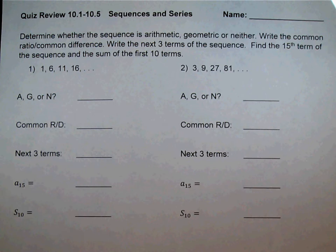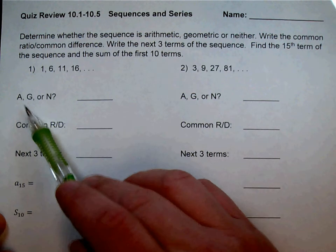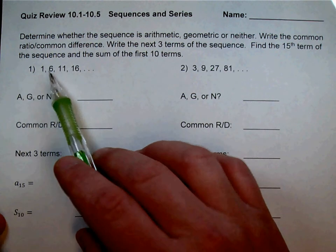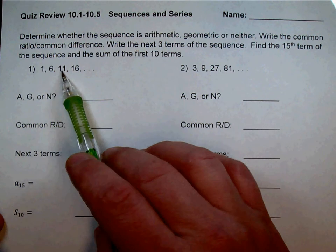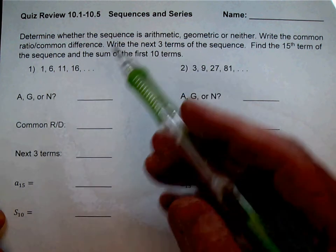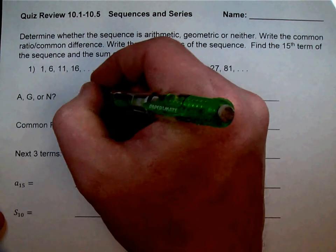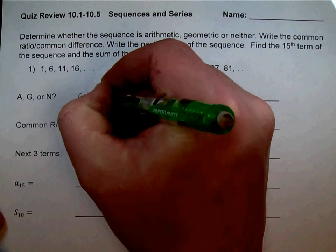Number one, we have a sequence: 1, 6, 11, 16. The first question is whether it's A, G, or N — arithmetic, geometric, or neither. From 1 to 6, it looks like I added 5, and I added 5 again, added 5 again. I can continually add 5, so that means this first one is arithmetic.